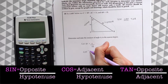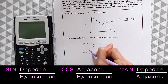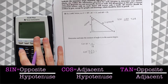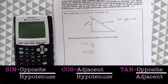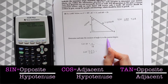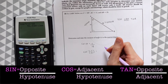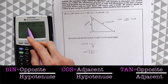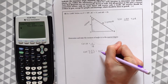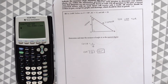Cosine to the negative one of 11 over 18. So we do second cosine and then 11 divided by 18. We're going to get a long decimal, but remember they wanted it to the nearest degree, so we're just going to round down and leave this at 52 degrees. And that's our answer.